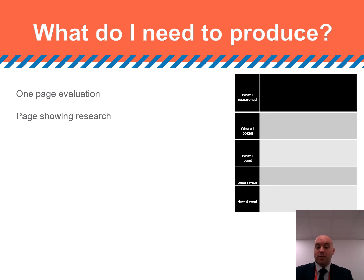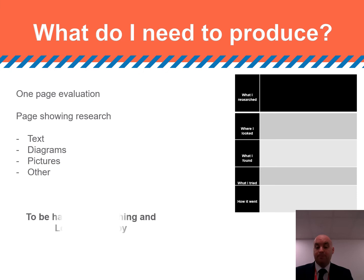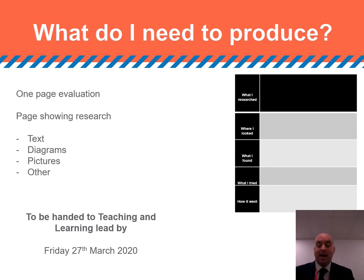You might want to go a little bit further and add another page showing your research. This could be in the form of text, diagrams, pictures, a mixture of all of them, or there might be a better way you can find to present your information. This second page is entirely optional and just there should you wish to produce some extra information to back up your five-box evaluation. You need to hand your completed evaluation into your teaching and learning lead, and if we could ask for this to be returned by Friday the 27th of March, this will give us time to chase up any that haven't come back.